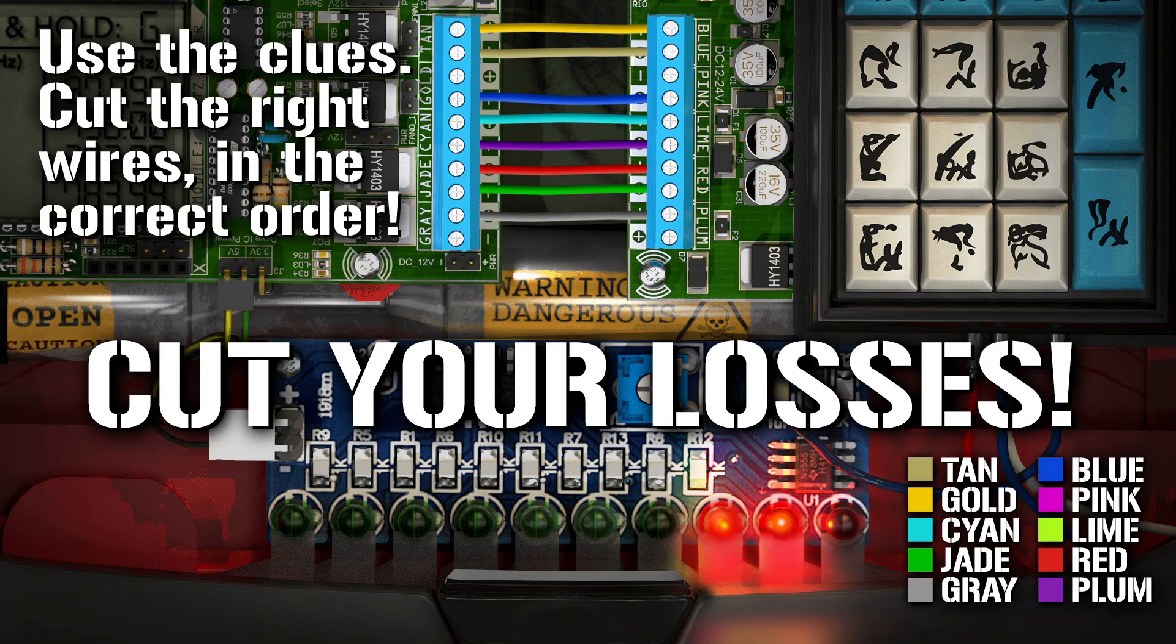If you are cutting red wire, wait until top left bottom is lime. Cut the color that is lit. 3, 2, 1. Cut.